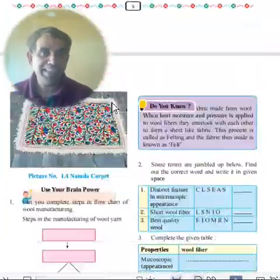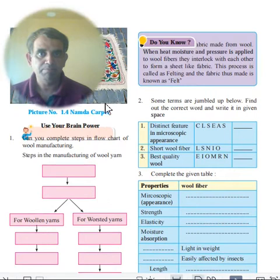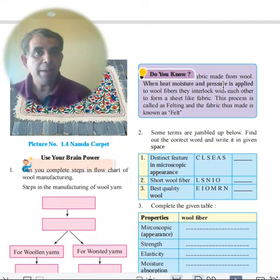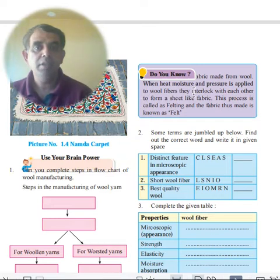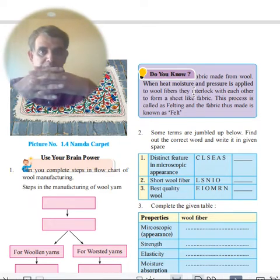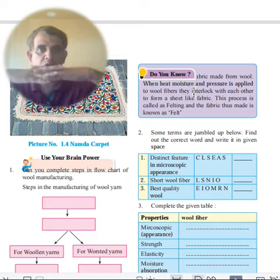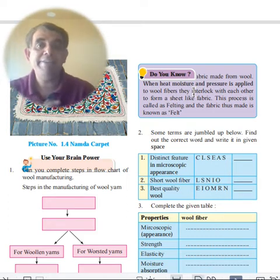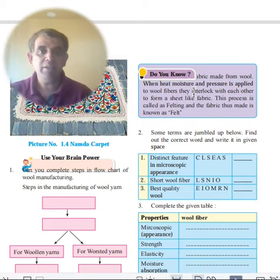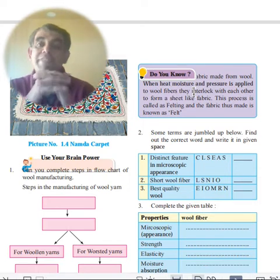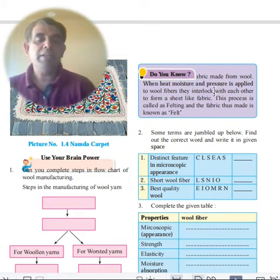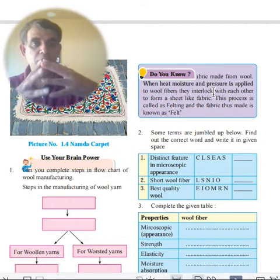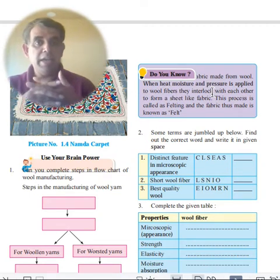On page ten, you'll find something very interesting: when heat, moisture, and pressure are applied to wool fibers, they interlock with each other to form a sheet. This is called felting — F-E-L-T — and the fabric formed is called felt.